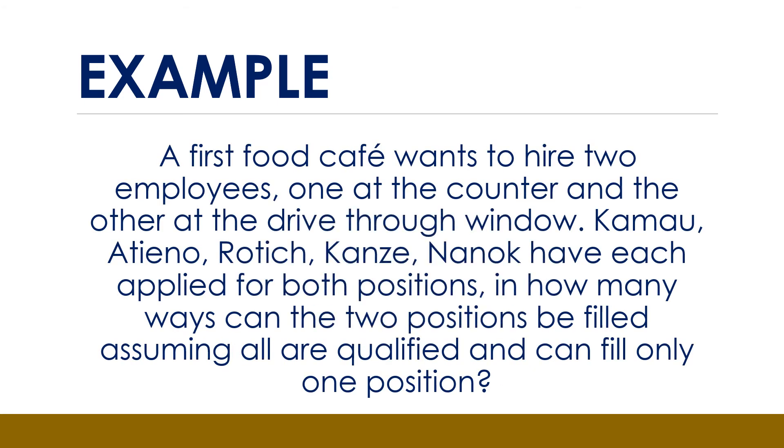Let's consider an example. A fast-food cafe wants to hire two employees, one at the counter and the other at the drive-thru window. Kamau, Atieno, Ratic, Kanze, Nanok have each applied for both positions. In how many ways can the two positions be filled, assuming all are qualified and can fill only one position? From the above example, we note that our problem is one that requires that we select two people from a group of five and assign each to a counter.